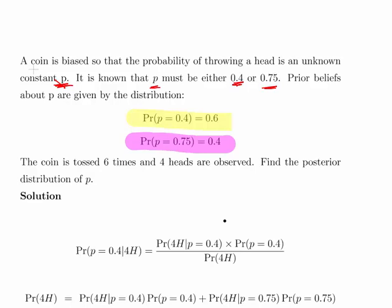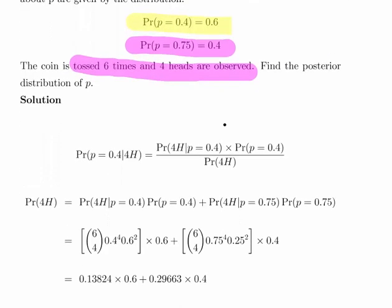The coin is tossed six times and four heads are observed. We're going to be using the binomial distribution here. The question asks us to find the posterior distribution of p — that is, the probability of p being 0.4 given that there were four heads. This uses the conditional probability formula, i.e., Bayes' theorem.